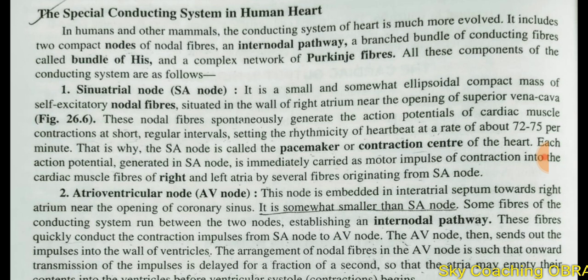In humans and other mammals, the conducting system of the heart is much evolved. It includes two nodes. There is an inter-nodal path — a path between the two nodes. And there are branched bundles of conducting fibers called the bundle of His.